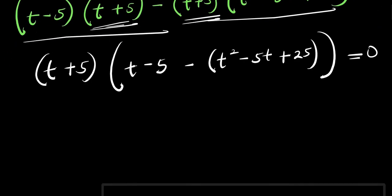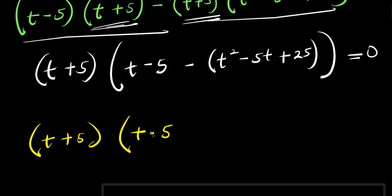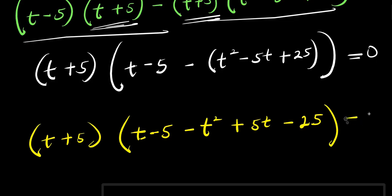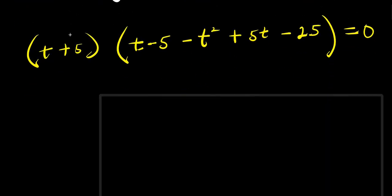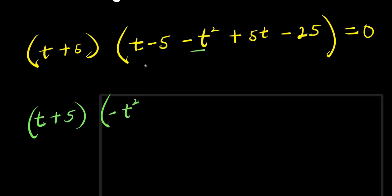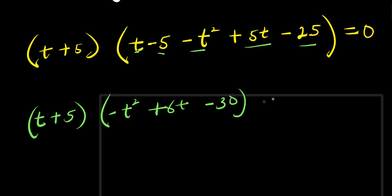Now we multiply out with the negative sign. So we have (t plus 5) times: t minus 5, then minus t², plus 5t, minus 25, and this equals 0. Combining the t terms inside the bracket, we have t plus 5t which gives 6t; combining the constants, negative 5 minus 25 gives negative 30. So we have (t + 5)(−t² + 6t − 30) = 0.